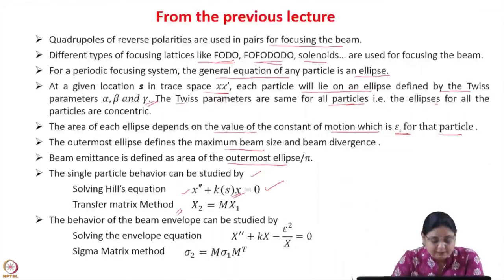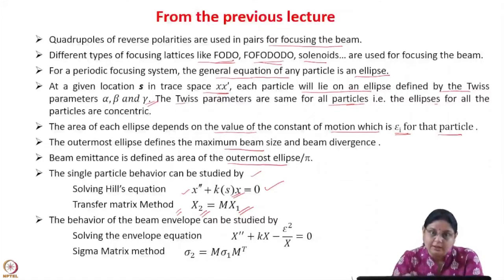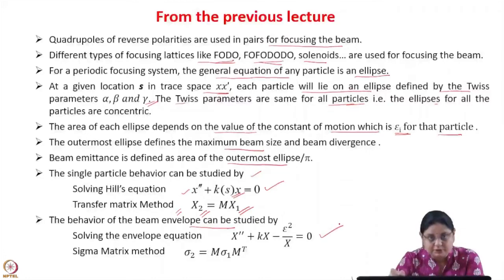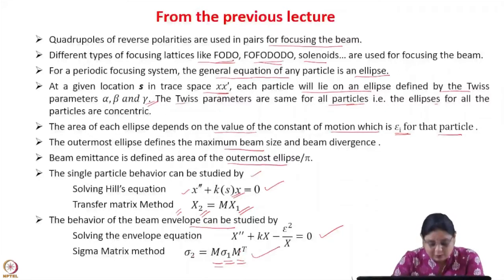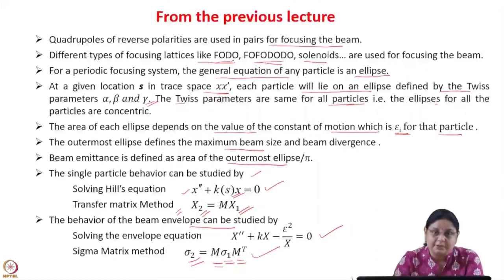The single particle behavior can be studied by solving the Hill's equation, which is a single particle equation that includes the force due to the quadrupole magnet or whatever element is present. We can also study single particle behavior by the transfer matrix method — if we know the transfer matrix of the element and the initial coordinates, we can find the final coordinates. The beam envelope can be studied by solving the envelope equation or by the sigma matrix method, where sigma matrices are defined in terms of Twiss parameters alpha, beta, and gamma, giving the entire beam information at a particular location.